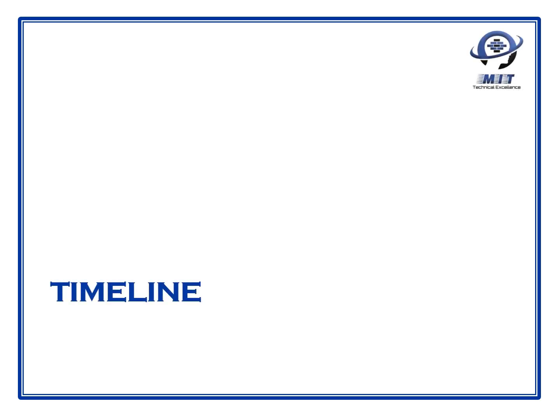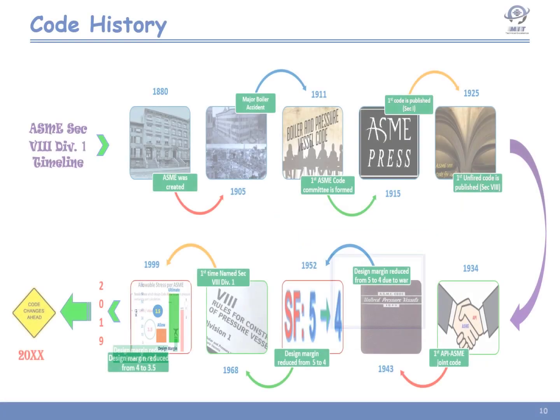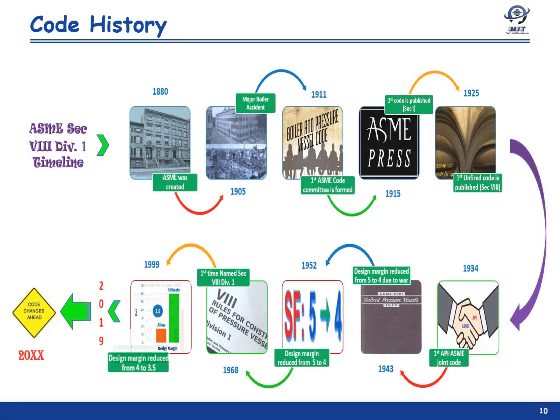Initial development of pressure vessel and boiler codes were forced because of too frequent and very catastrophic pressure vessel and boiler explosions during the 19th and early 20th centuries.